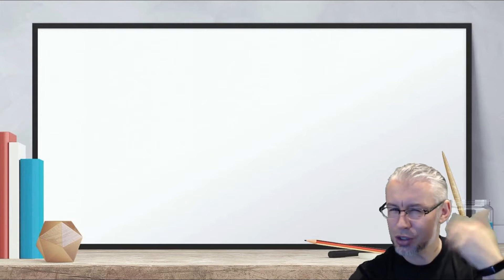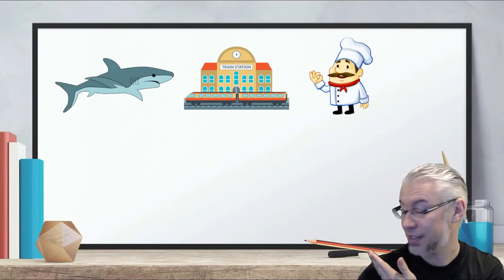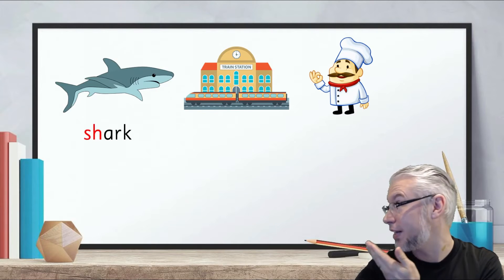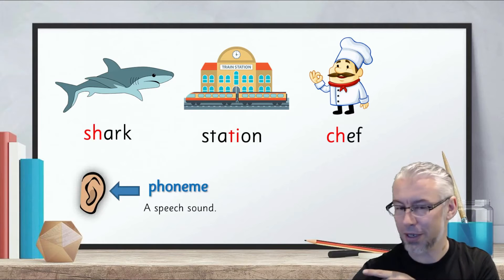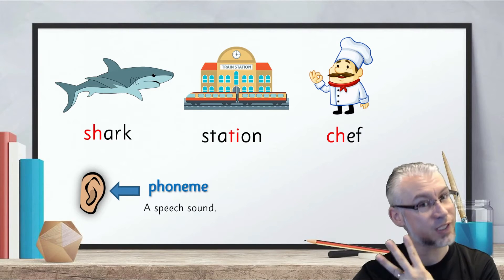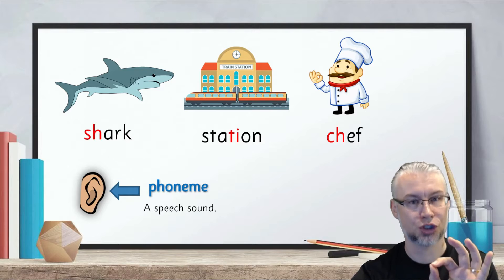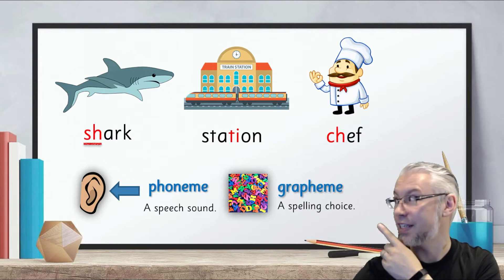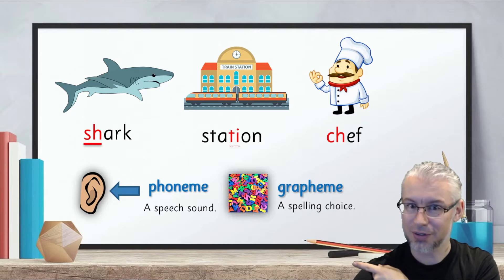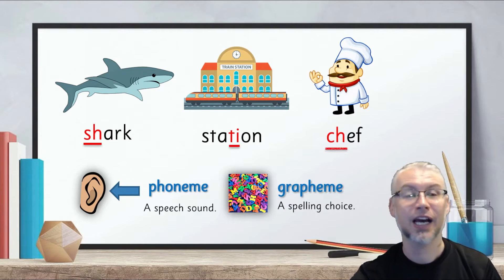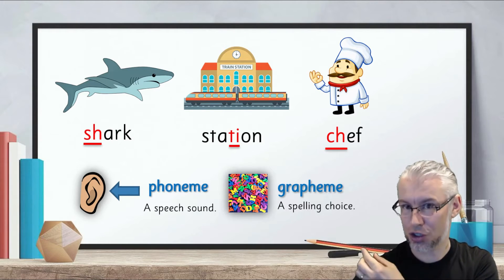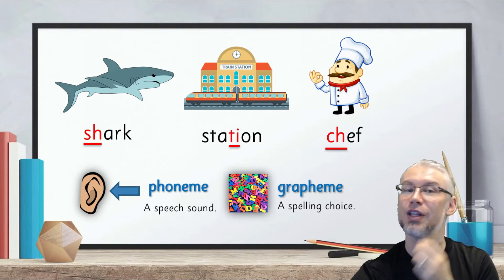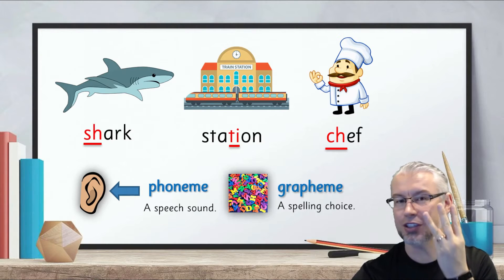Let's have a quick example just to review. We have a shark, we have a station, and we have a chef. If we look at the phoneme, the phoneme for all three is 'sh', but the grapheme is 'sh' in shark, 'ti' in station, and 'ch' in chef. So you can see the phoneme is 'sh' for all of them but there are three different graphemes.